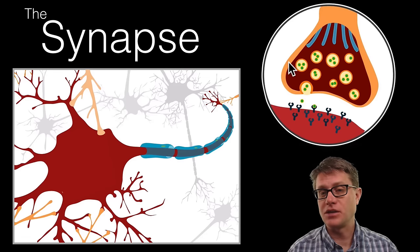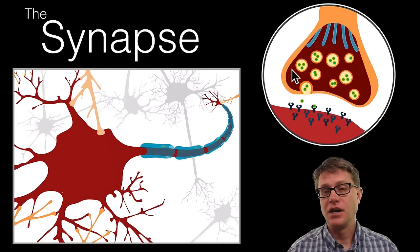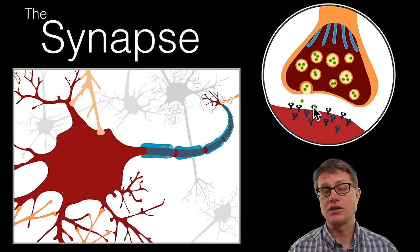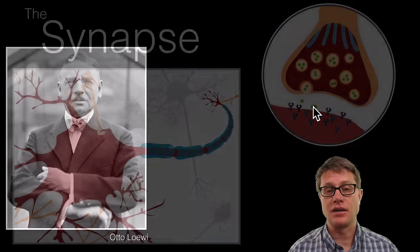In a chemical synapse you have an action potential move down an axon. It triggers the release of neurotransmitters into this gap or this cleft right here. They are going to dock with chemically gated channels on the other side and that can lead to an action potential on the other side.